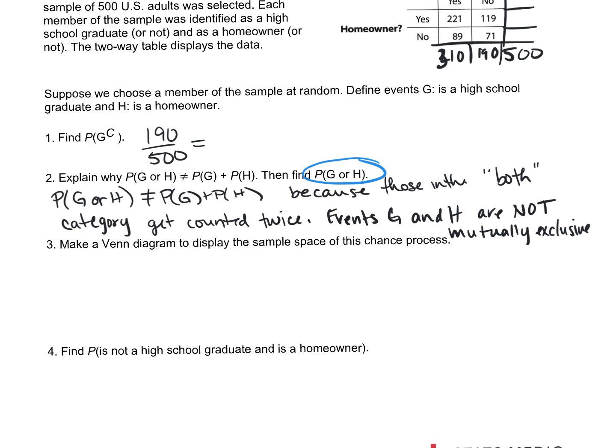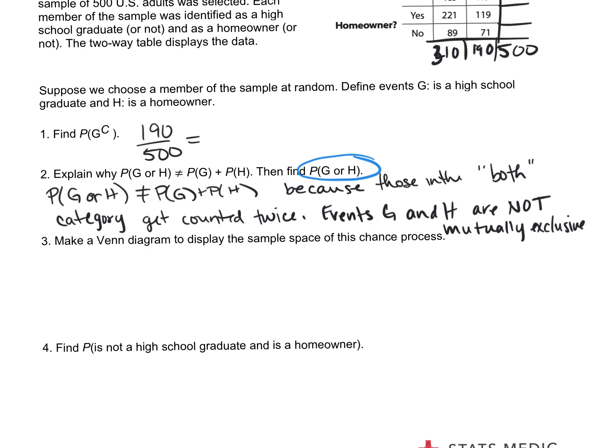So what does it mean to be a graduate or a homeowner? Who does that all include? The people that are graduates, right? And not homeowners, the people that are graduates and homeowners, and the people that are homeowners but not graduates, those all qualify as graduate or homeowner. One or the other or both, which is why to find the probability of G or H, we can add up all the boxes except for the no-no. The no-no group is the only group that's not in the or category.